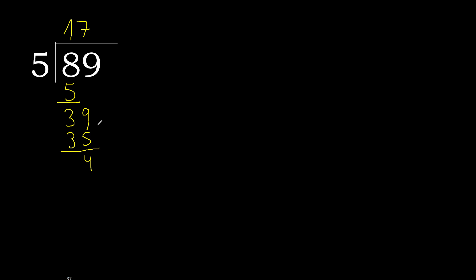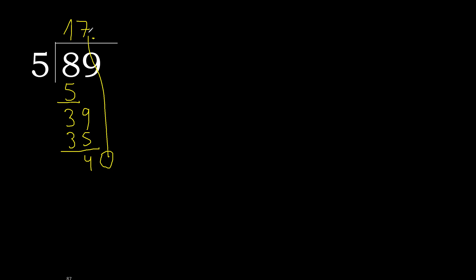Next — there is no next digit, so complete with 0. Always complete with a decimal point here: 0 point. Bring down 0 to get 40. 5 multiplied by 8 is 40. 40 minus 40 is 0 — therefore finish.